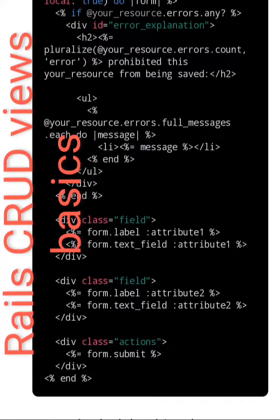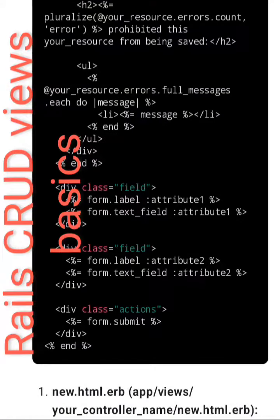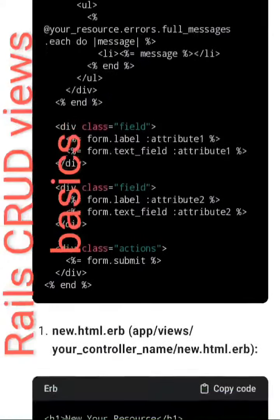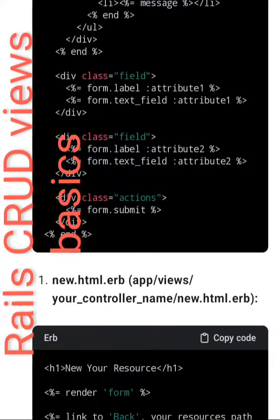Message, end div. div class field: form.label :attribute_1, form.text_field :attribute_1. div class field: form.label :attribute_2, form.text_field :attribute_2. div class actions: form.submit. End form.